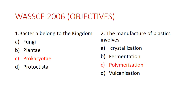Question two: the manufacture of plastics involves A) crystallization, B) fermentation, C) polymerization, D) vulcanization. The answer is polymerization. Crystallization forms crystals used in making salts; fermentation produces alcohol; vulcanization relates to tyres. Polymerization involves making large molecules from small molecules — polythene, for example, is formed from small molecules of ethene joined together.